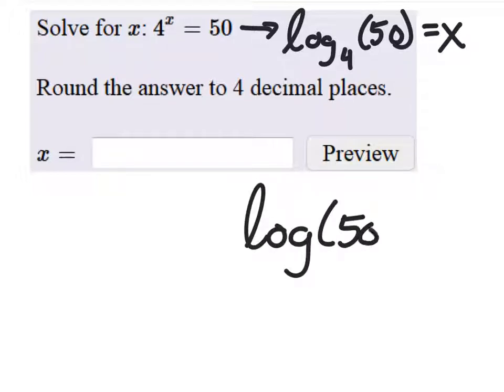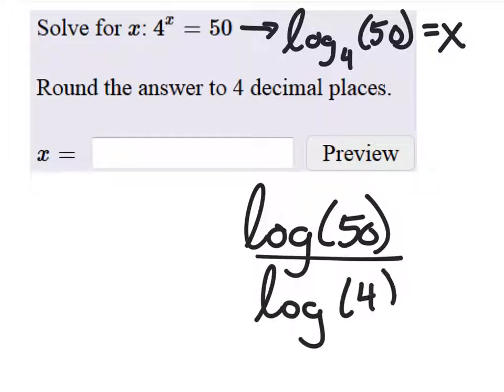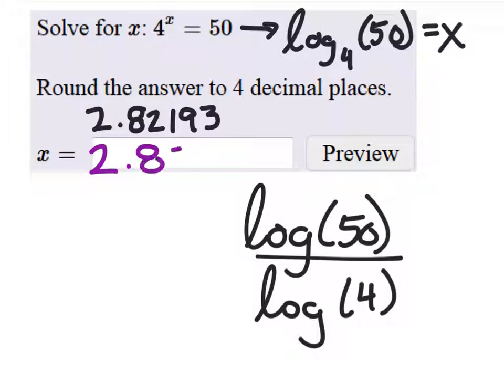If we plug that into the calculator, we'd have log of 50 divided by the log of 4. So on my calculator this is what it gave me: 2.82193. So as you have said, x would be 2.8219, that would be our actual answer there.